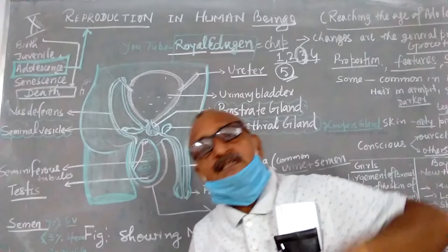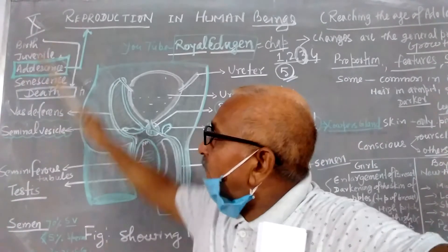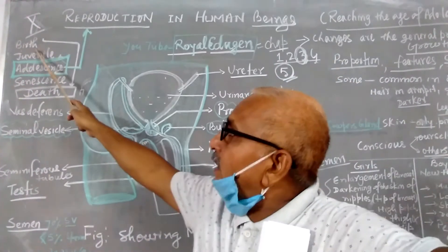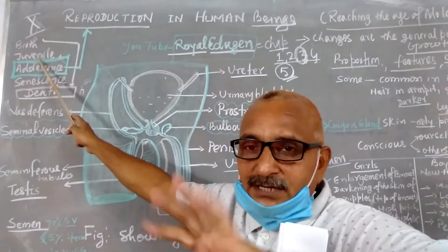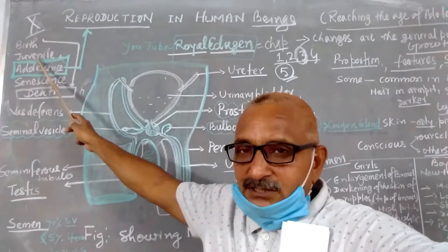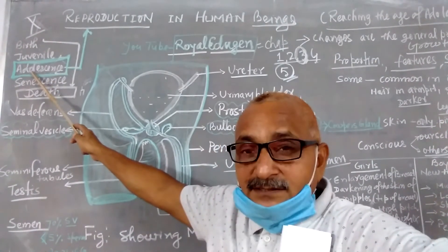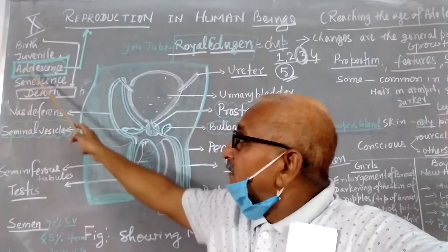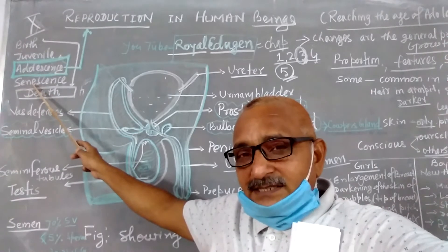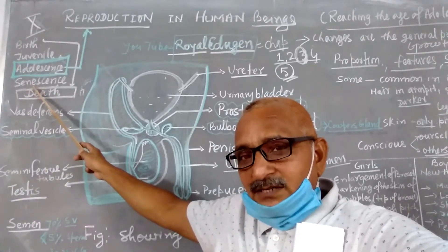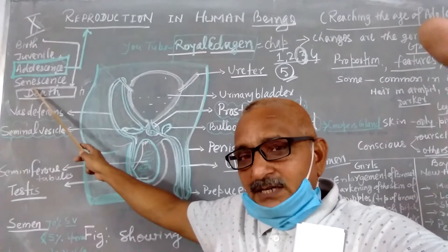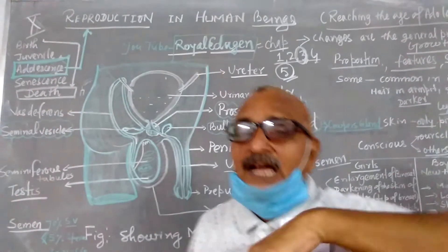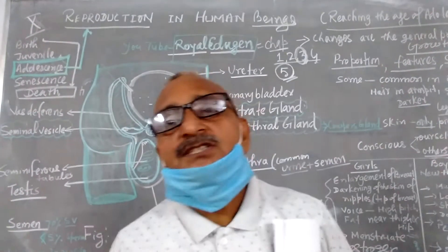As we know that in the human life there are mainly five stages everybody has to pass. Birth, juvenile phase where the reproductive maturity is not attained, adolescence, reproductive maturity gained in this period and senescence that is old hood you can say where the reproductive capacity gets failure and then death. So these are the five stages in everybody's life.